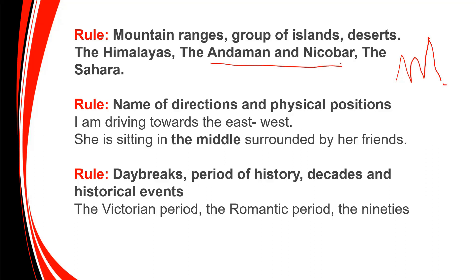Before names of directions and physical positions: 'I am drawing towards the east, the west.' 'She is sitting in the middle.' And before day breaks, periods of history, decades, and historical events, usage of 'the' is mandatory: the Romantic period, the Victorian period, in the morning session, in the evening session.